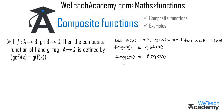Here g of x is x square plus 1, so f of g of x equals f of x square plus 1. We find this value by replacing x with x square plus 1 in f of x equals x cube. So we get x square plus 1, whole cube, as the value of f circle g of x.